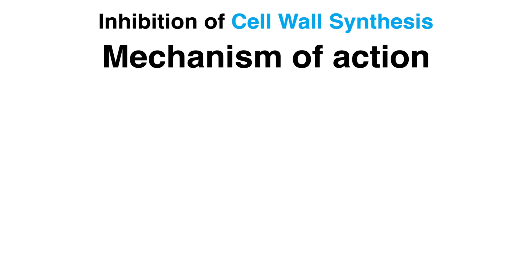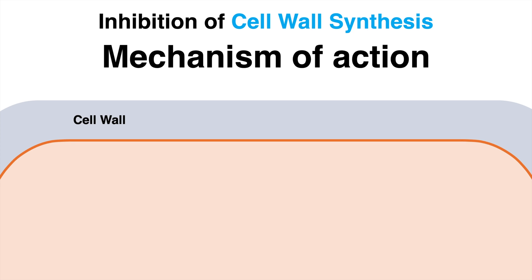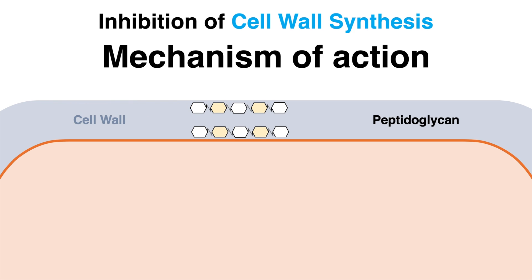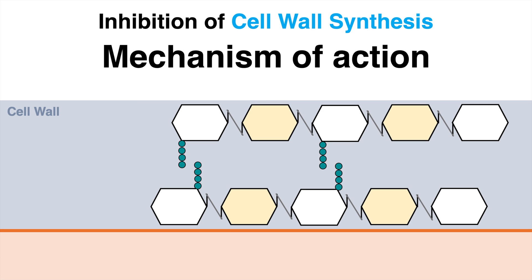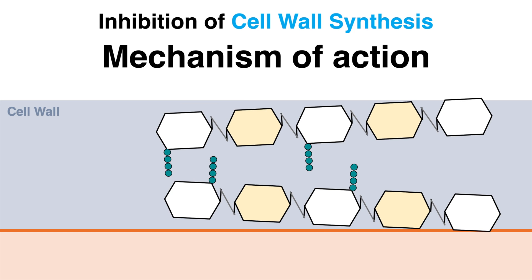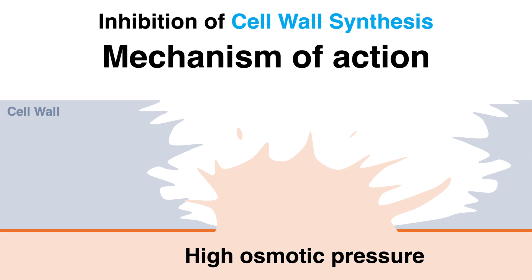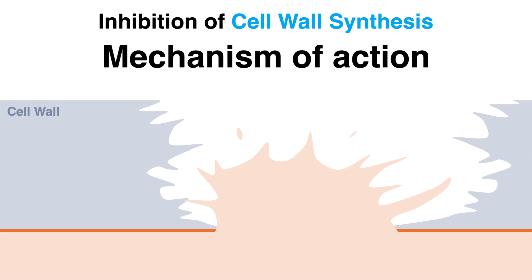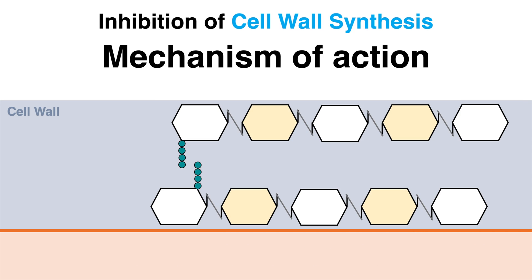One class of antibiotics inhibits the cell wall synthesis. The bacterium has a cell membrane and also a cell wall, which consists of peptidoglycan. These are sugar molecules interlinked with peptide bonds. A bacterial cell wall looks like this. Without the essential peptide bonds, the cell wall becomes extremely unstable. As a consequence, the cell can even burst due to the high osmotic pressure inside.